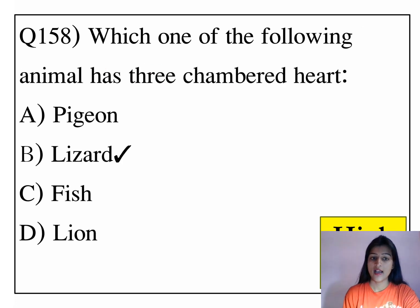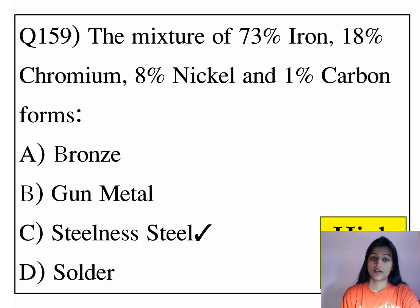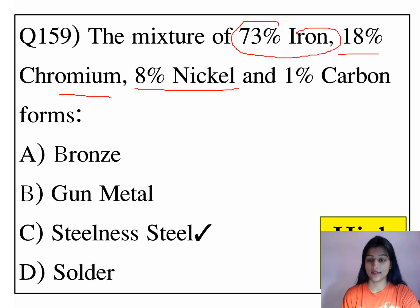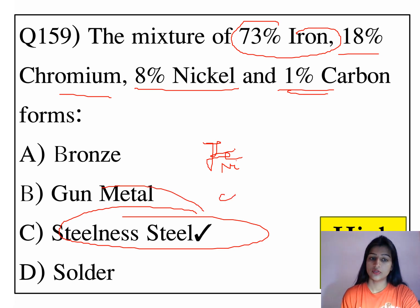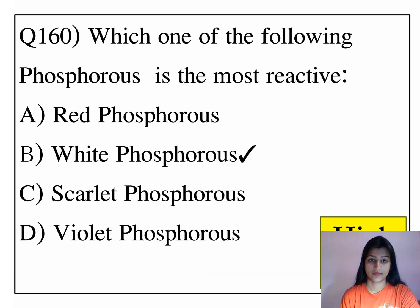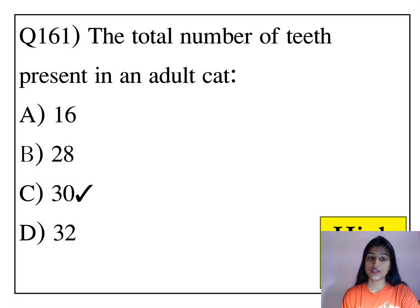Which one of the following animals has three chambers in its heart? The mixture of 73% iron, 18% chromium, 8% nickel, and 1% carbon forms stainless steel. Which of the following is the most reactive form of phosphorus? White phosphorus is the most reactive. The total number of teeth present in an adult cat is 30.